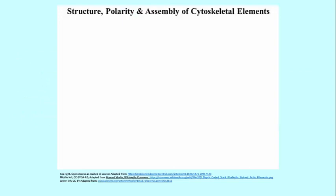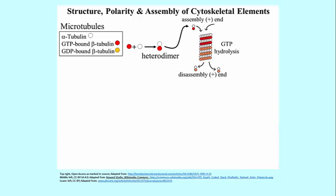Let's look at the structure, the polarity, and the assembly of cytoskeletal elements. Here we have microtubules. Microtubules are built from tubulin monomers, and one of the monomers — the beta tubulin monomer — actually binds GTP, shown as the red ball. A heterodimer forms when an alpha and a GTP-bound beta come together, and microtubules are formed by the aggregation of these heterodimers containing GTP, at least to start with.